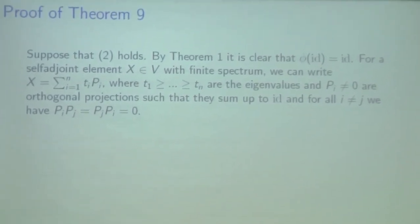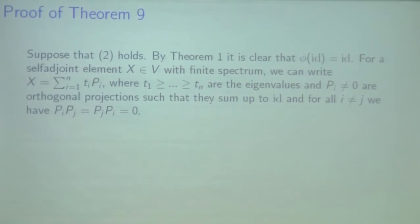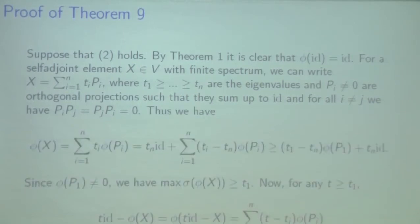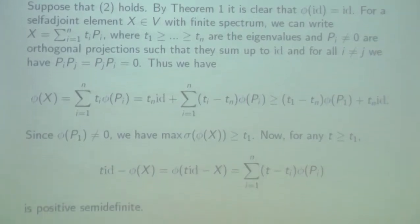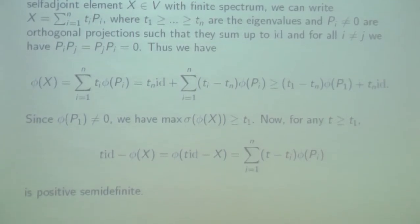We use the quite interesting non-trivial idea that the set of all self-adjoint operators with finite spectrum is dense in the set of all self-adjoint operators. Suppose that the operator has finite spectrum and can be expressed as a sum where t sub i are eigenvalues and V sub i are orthogonal projections. We then make a small calculation and show that the maximum of the real part of phi of X is greater than or equal to t sub 1, where the inequality is the standard partial order.